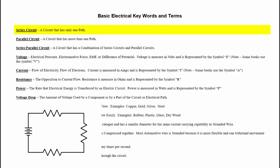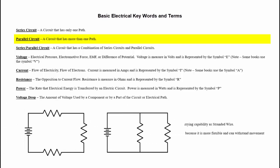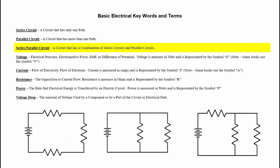A series circuit is a circuit that just has one path. A parallel circuit has more than one path, and a series parallel circuit is just a combination of the two.